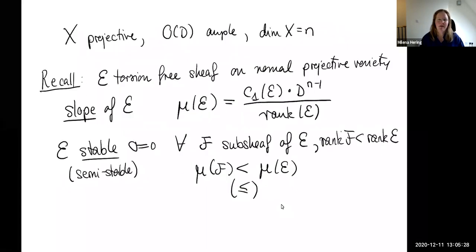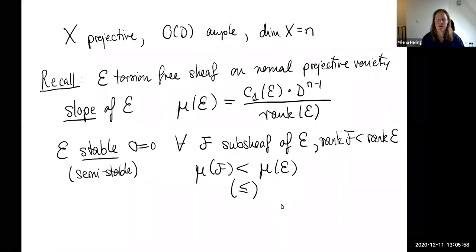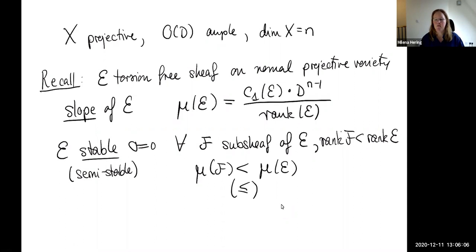Let me first remind you what it means for a vector bundle to be stable. Let X be a projective variety, O an ample line bundle on it, and let the dimension of X be N. For a sheaf E on such a variety, the slope of E with respect to this ample polarization is defined as the intersection of the first Chern class of E with O to the N minus 1, over the rank of E. We say E is stable if and only if for every sub-sheaf F of E of smaller rank, the slope of F is less than the slope of E; and semi-stable if the slope of F is less than or equal to the slope of E for every sub-sheaf.